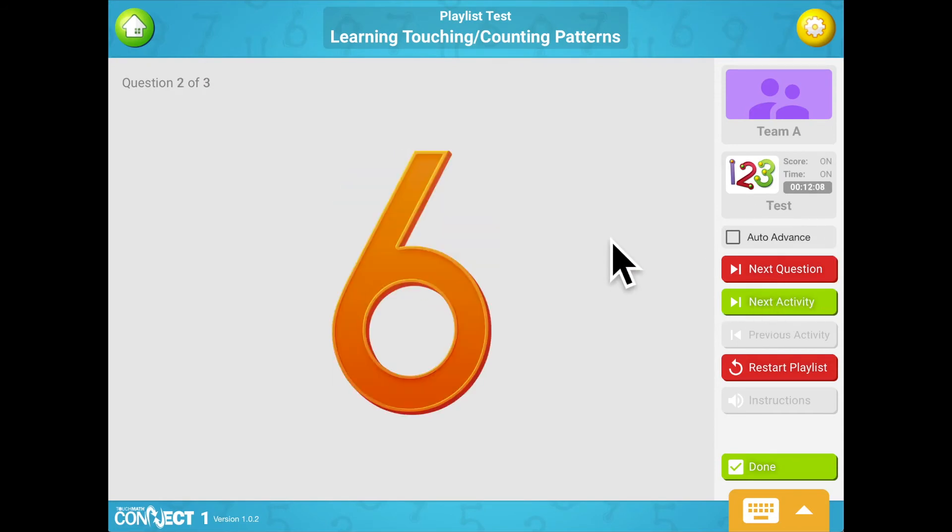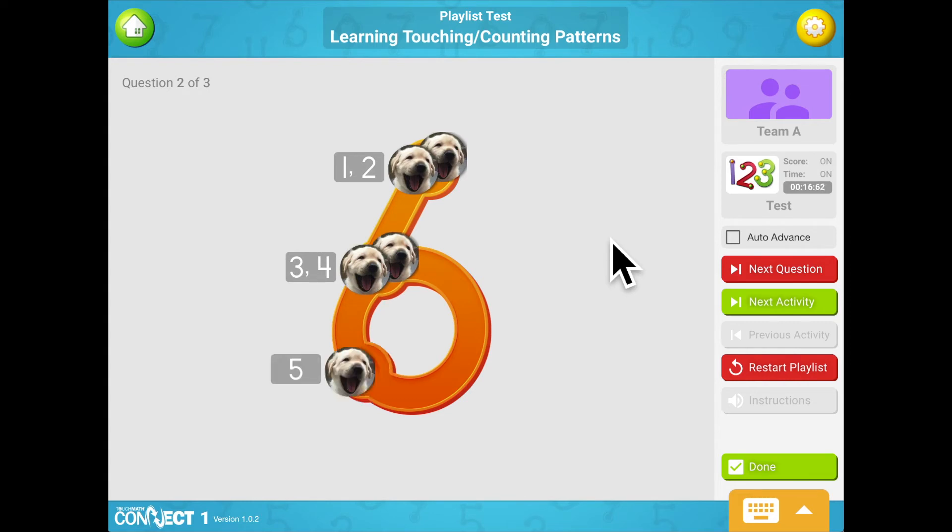The numeral 6 has double touch points. This means you touch and count each touch point twice. The 6 is touched and counted from top to bottom: 1, 2, 3, 4, 5, 6. Touch and count the touch points on the numeral in the correct order. Click on the Done button when you are finished. 1, 2, 3, 4, 5, 6. Great job!